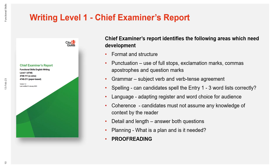The latest Chief Examiner's report for writing at level one identifies the following areas which need development. Format and structure, particularly reports, narratives and formal letters. Punctuation — commas and apostrophes appear to be the biggest stumbling block. Grammar: subject-verb and verb tense agreement is challenging for many learners, as is omitting the definite and indefinite article in writing, causing a problem with sense.